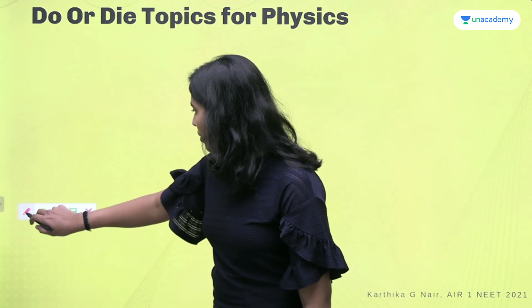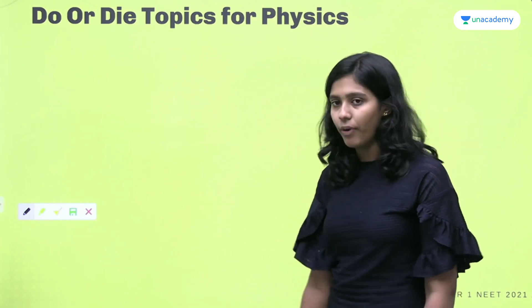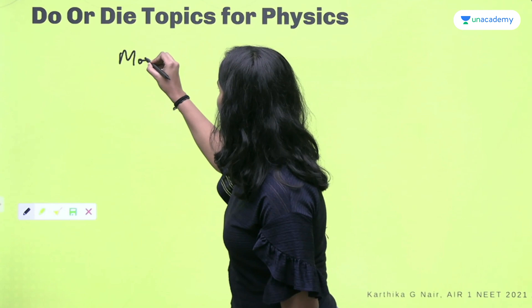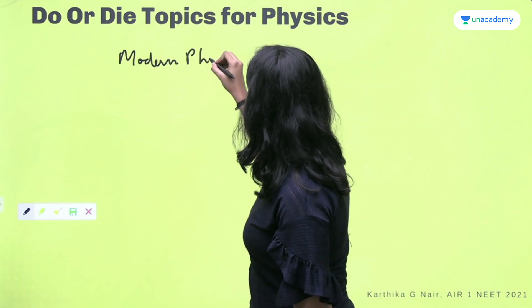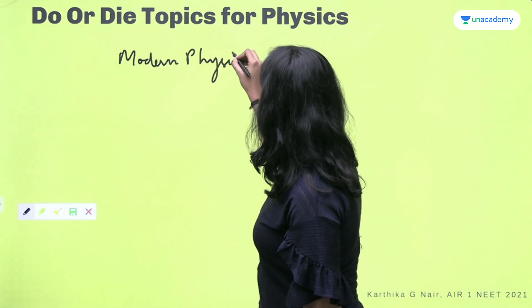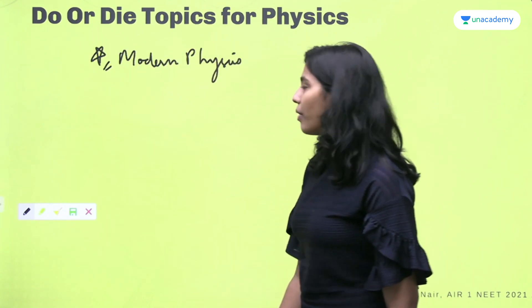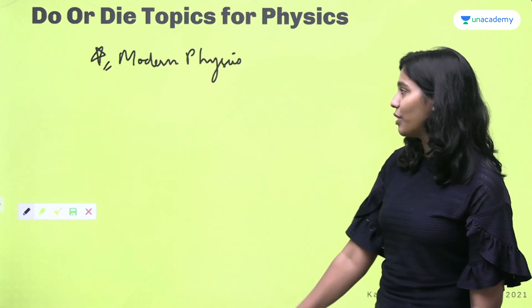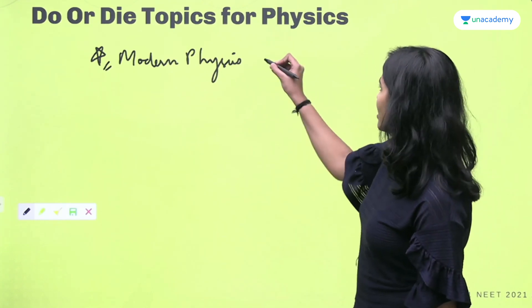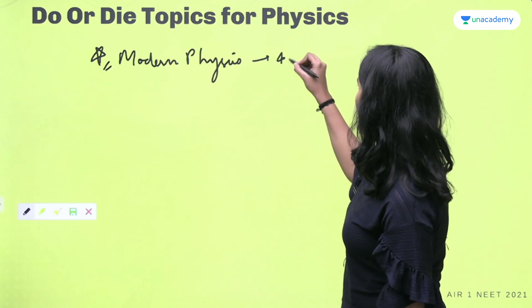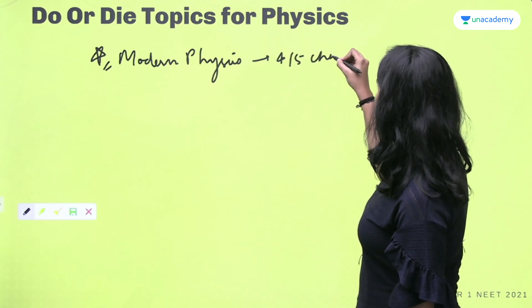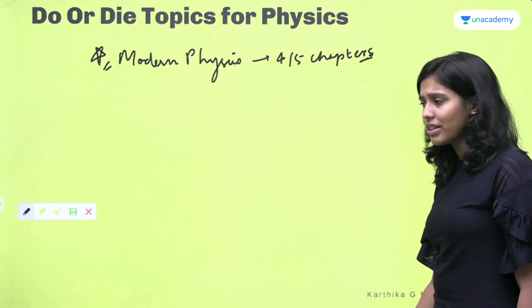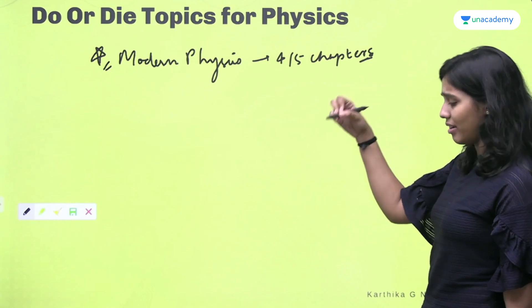So talking about physics, the most important topic of physics I would say is modern physics. This is by far, according to me, the most important topic of physics because directly around 10 to 15 questions are going to come from this topic and this topic consists of around four or five chapters which are given at the end of class 12th in NCERT.